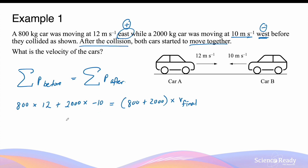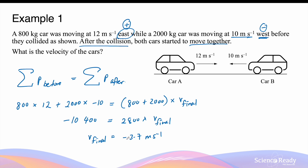On the left hand side, we have a value of minus 10,400. On the right hand side, we have 2800 multiplied by V final. By dividing both sides by 2800, V final equals minus 3.7 meters per second. The minus here suggests that after the collision, the cars will move in the negative direction — which is west — at 3.7 meters per second. So you can also present this answer as 3.7 meters per second west.